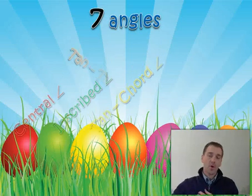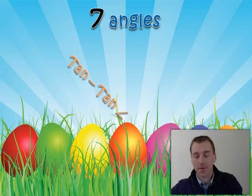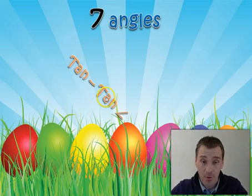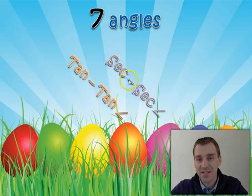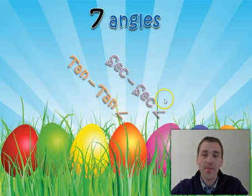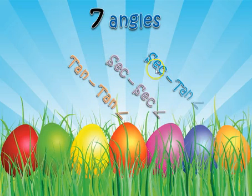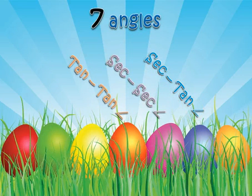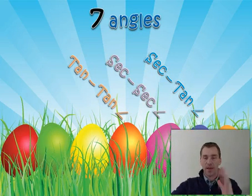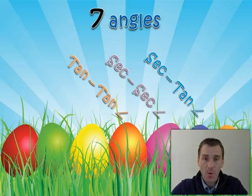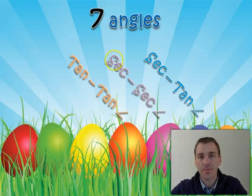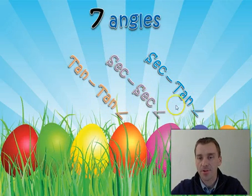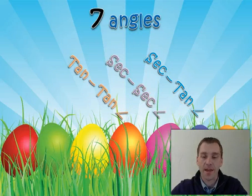Here's what you're going to see: the first is called a tangent-tangent angle, the second is a secant-secant angle, and the third is a secant-tangent angle. On the bottom flap of the foldable — which has the most space — we're going to draw three different pictures, one for each angle type, and I'll give you the formula for finding the measure of each.